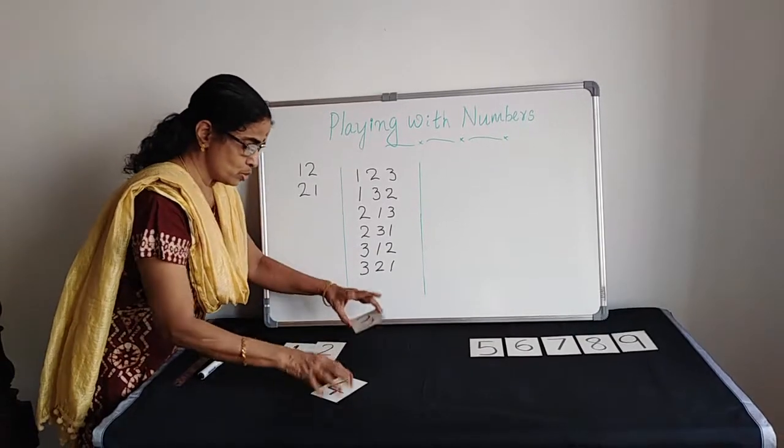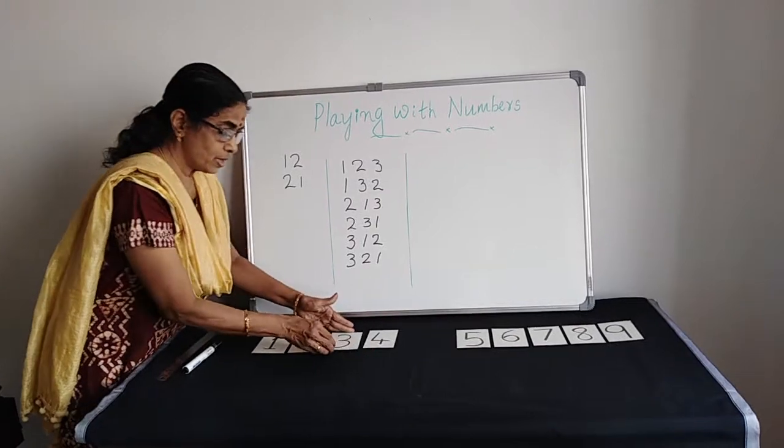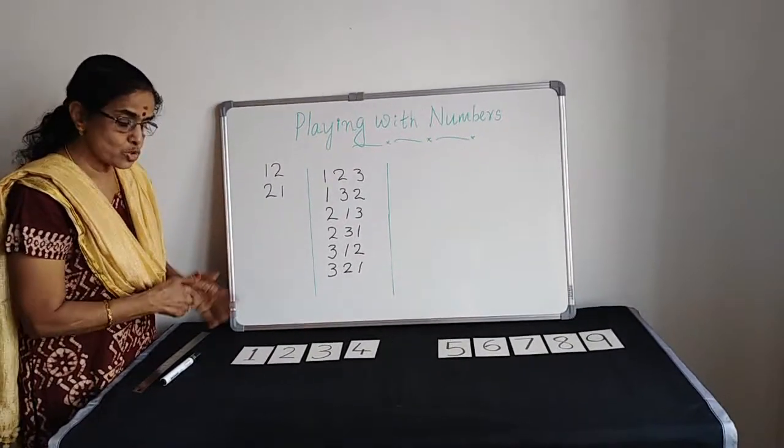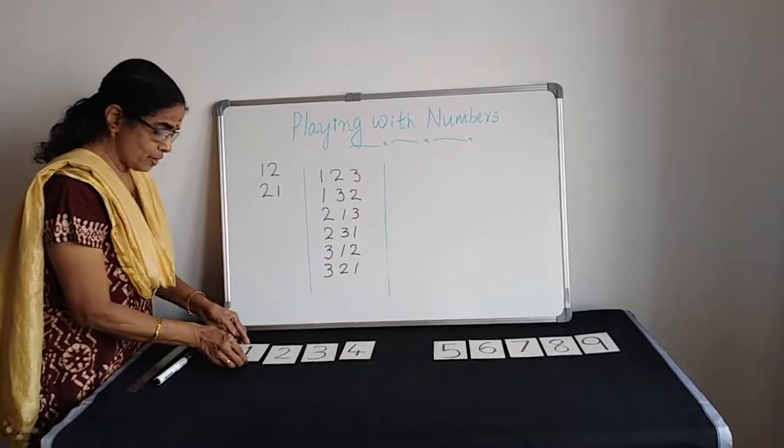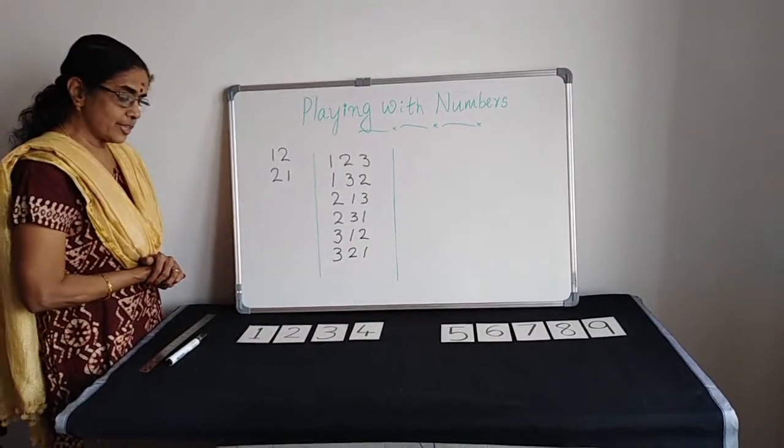1, 2, 3, 4. We have taken 4 cards. We are going to make 4 digit number. Here we are not supposed to repeat the digit. The first number is 1, 234.